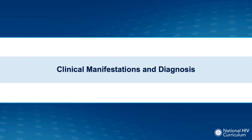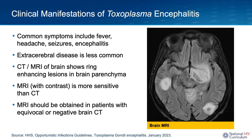Let's now discuss some of the clinical manifestations associated with toxoencephalitis and review how you can make a diagnosis. The most common symptoms associated with reactivation of toxoplasma in people with HIV are neurological — specifically headache, seizures, focal neurological deficits, and encephalitis, including fever and mental status changes. We rarely see disease outside of the central nervous system in people with HIV.